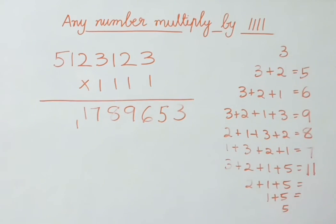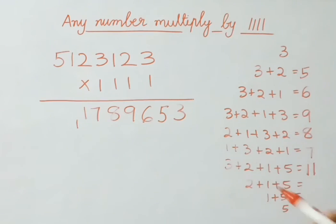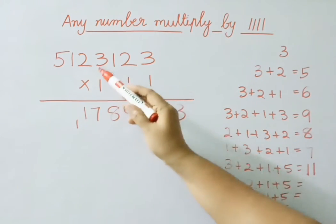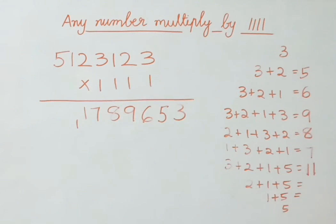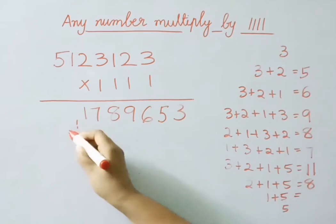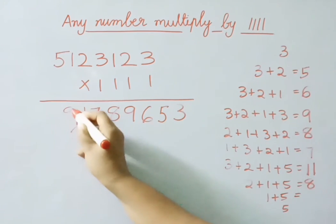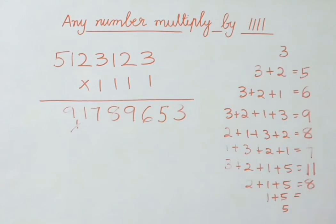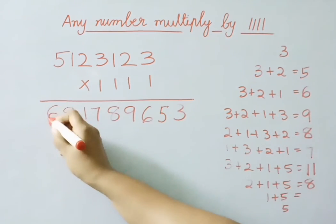Now add the last 3 digits: 2 plus 1 is 3, 3 plus 5 is 8. With carry 1, 8 plus 1 is 9. Now add the last 2 digits: 1 plus 5 is 6.